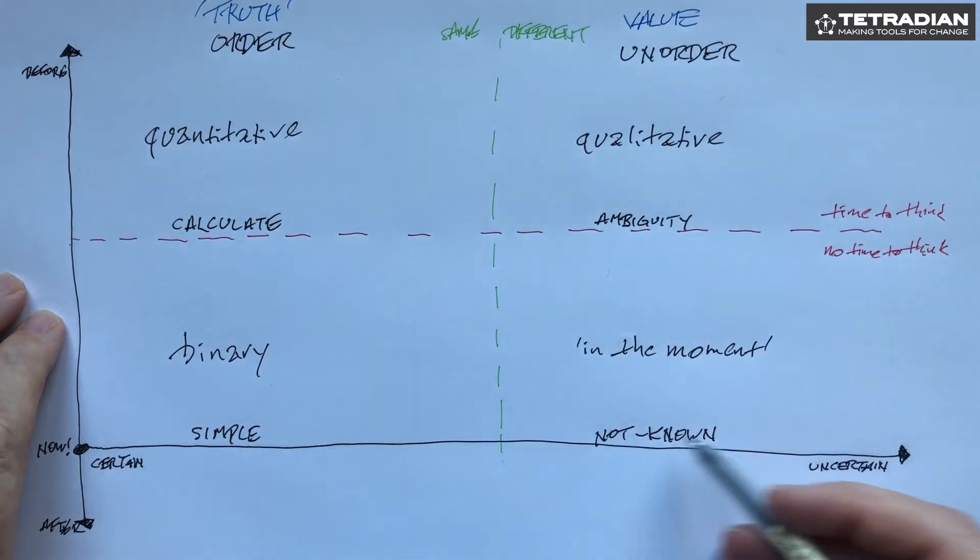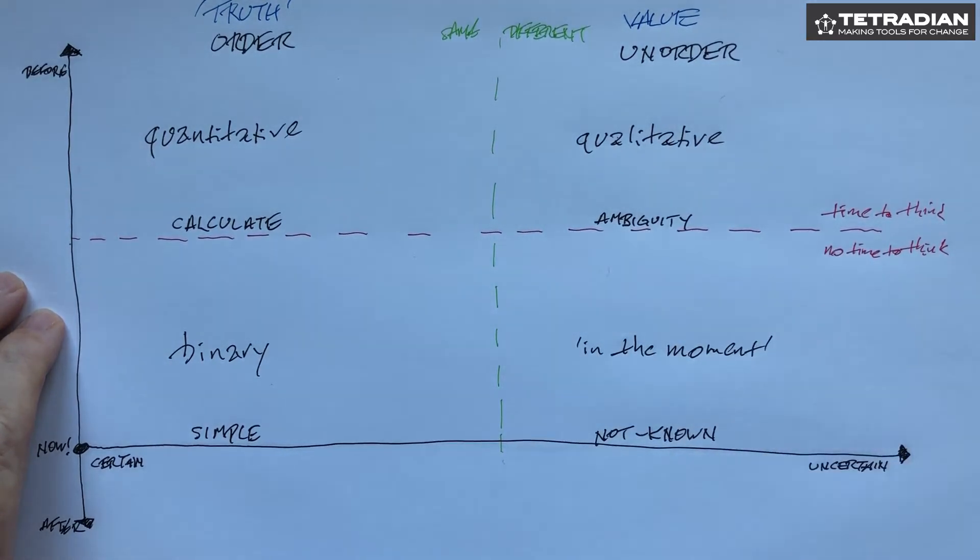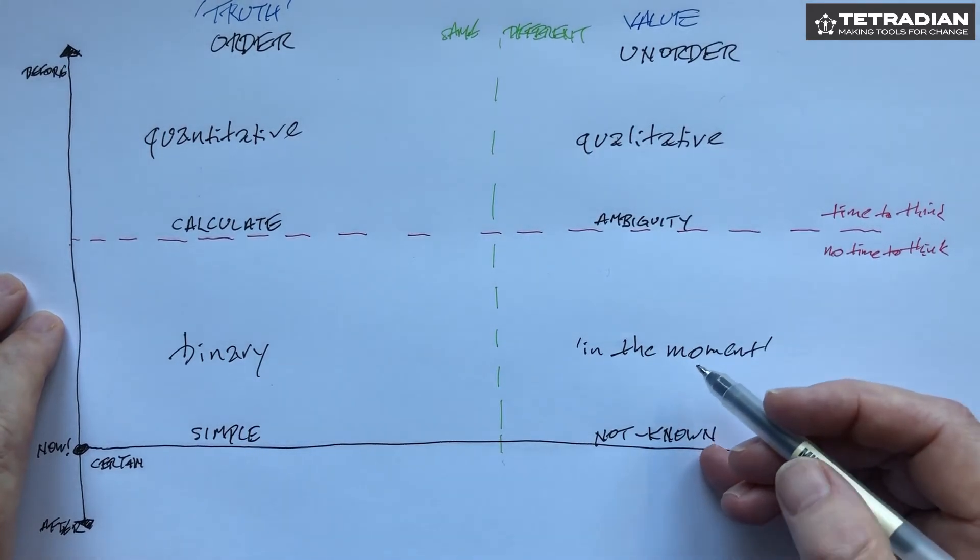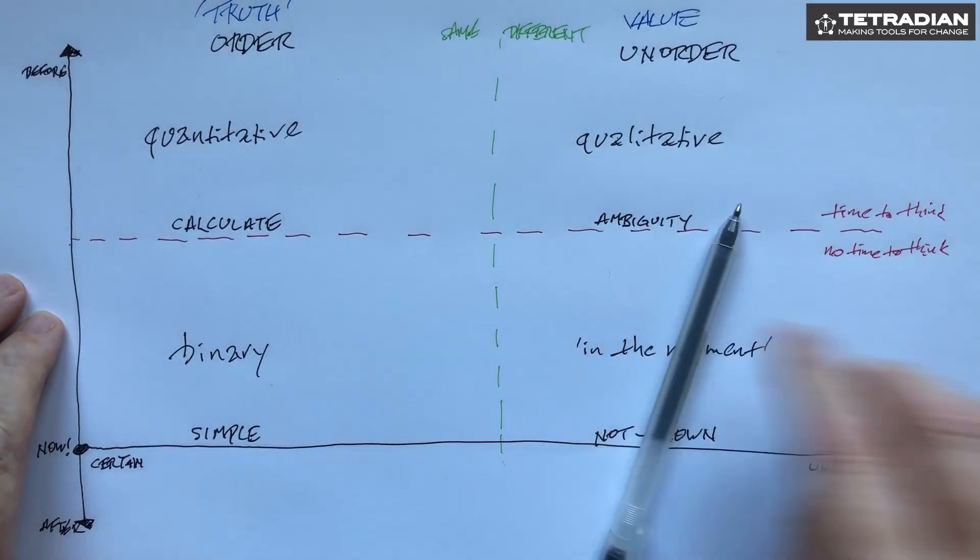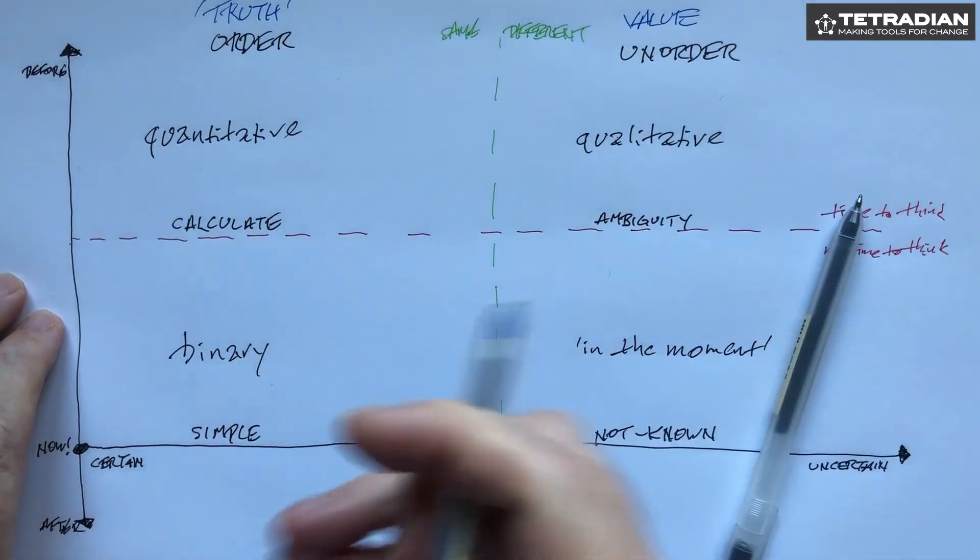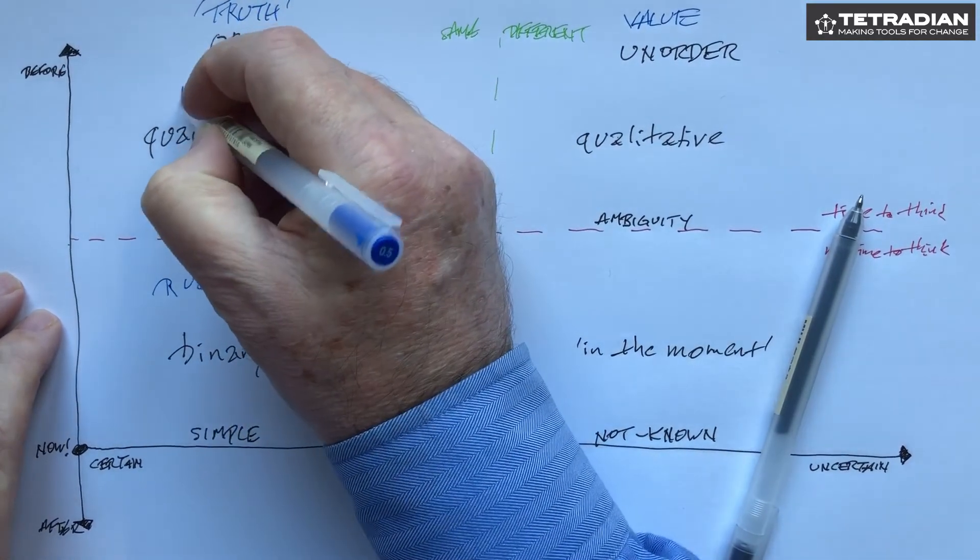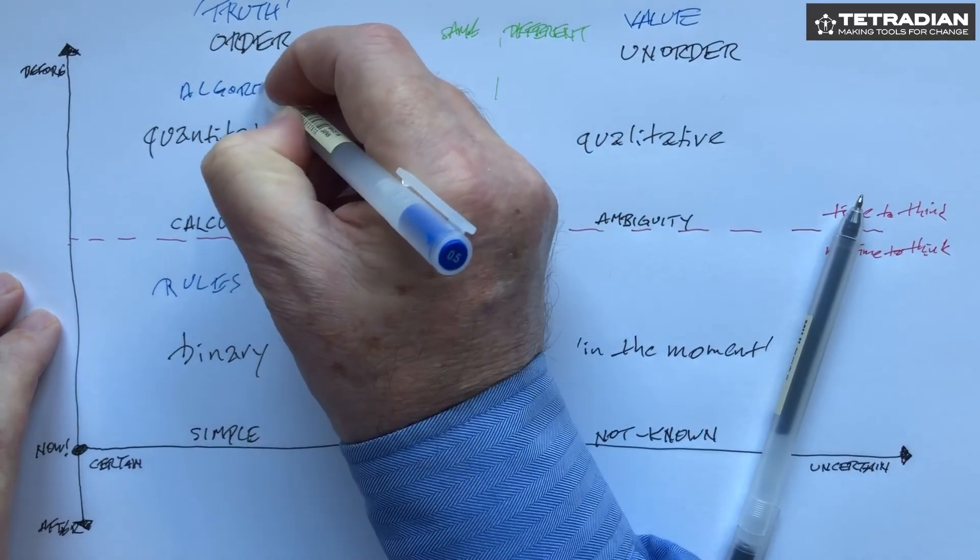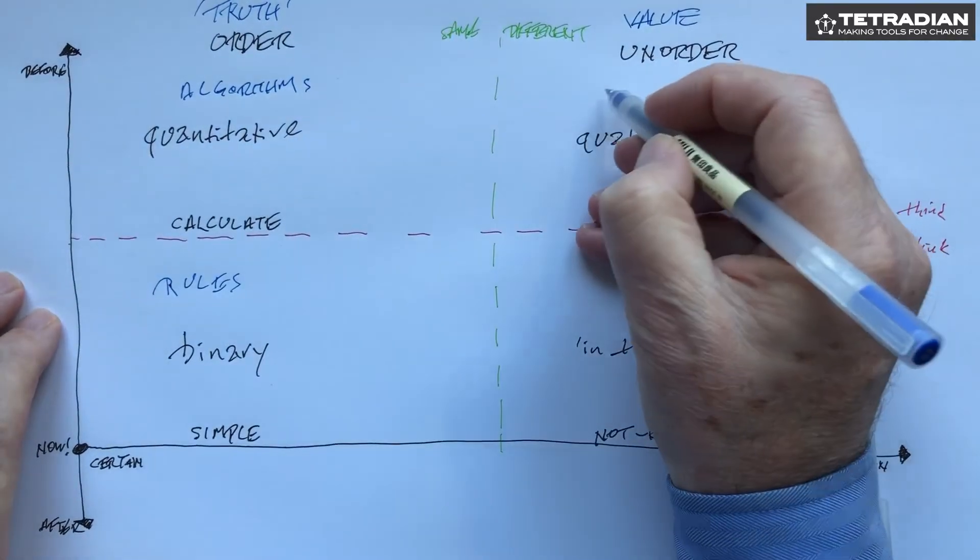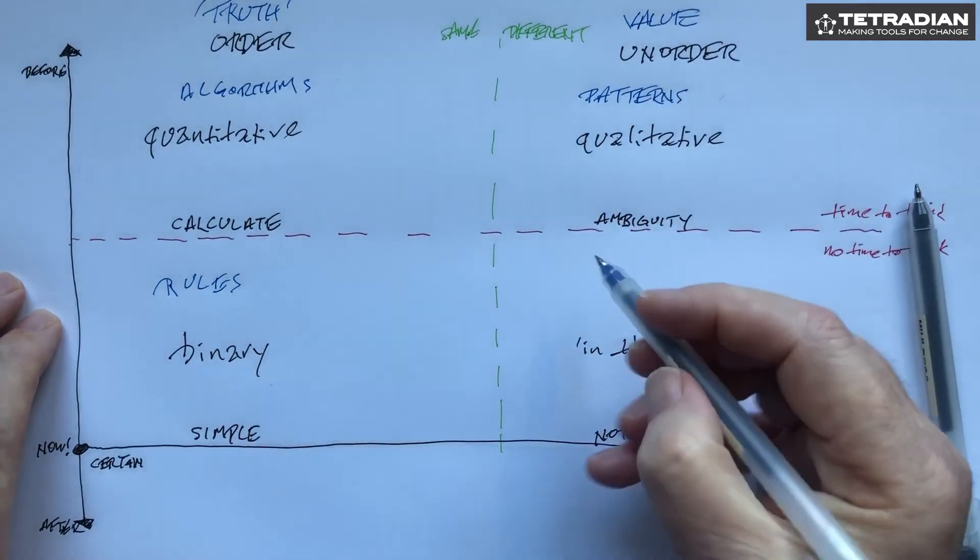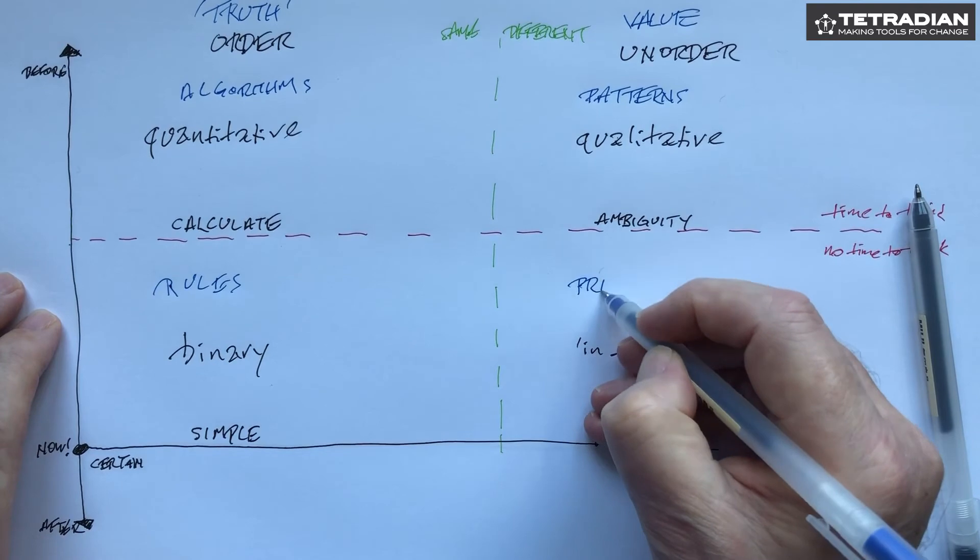Whereas down in here we need ways to shake things up or where we're being shaken up. What guides us most is principles. So if we put that in another way, then what we've got here are rules, algorithms, patterns or heuristics, and here we have the one major guidance we have is principles.